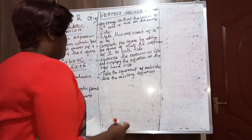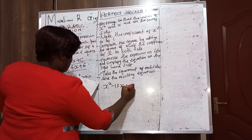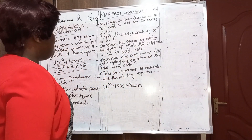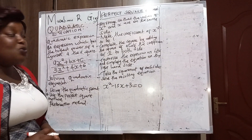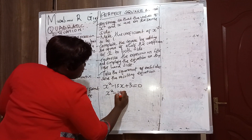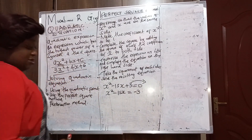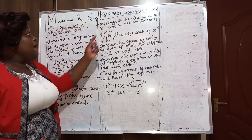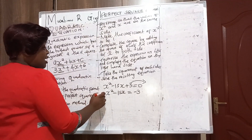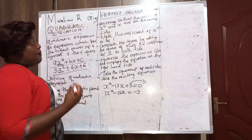Let's try another example: x² − 15x + 3 = 0. The first step is to rearrange so that x squared and x are on the same side: x² − 15x = −3. The next step is to make the coefficient of x squared equal to 1 — it is already 1, so we can go to the next step.